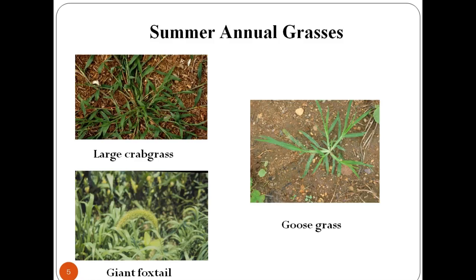There are two types of annuals. Summer annual weeds generally emerge as soon as soil temperatures warm in the spring or early summer. Many species continue to germinate throughout the summer under adequate conditions. Summer annual weeds grow, flower, produce seeds and are killed by frost during the fall season.